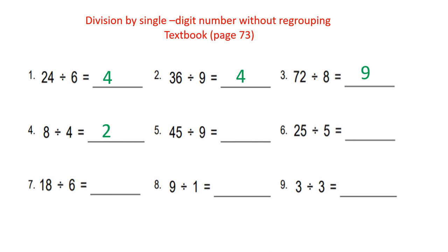45 divided by 9 equals 5, because 5 times 9 equals 45. And 25 divided by 5 — I can find 25 when I multiply 5 times 5. And 18 divided by 6: if you look on the times table of 6, you will find 18 there. 3 times 6 equals 18. Also 9 divided by 1 equals 9, and 3 divided by 3 equals 1.